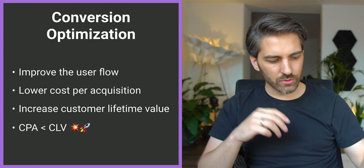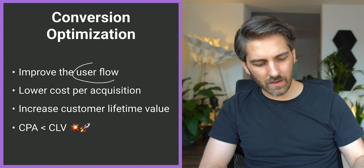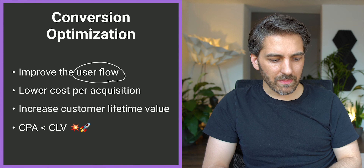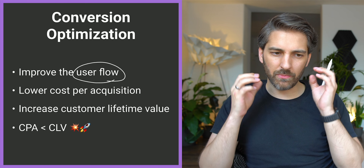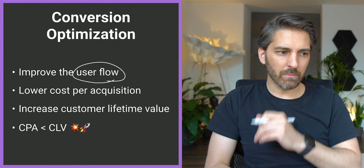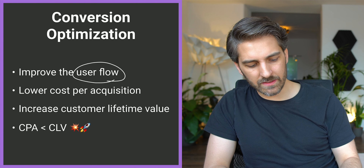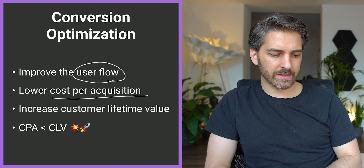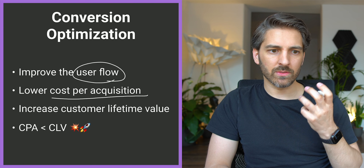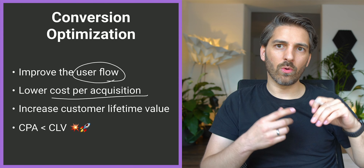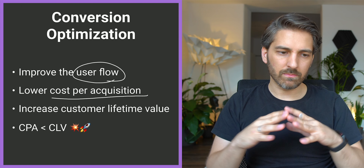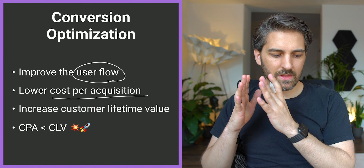The general idea is to improve the user flow — if it gets smoother, then we have optimized our conversions. From the marketing point of view, user flow is heavily involved in the product as well, but in marketing we're interested in two things. The first thing that comes to mind is cost per acquisition or customer acquisition costs, which is probably what most people focus on when they try to optimize conversions and use A-B testing — they want to drive the cost for an email subscriber, a customer, or a free trial as low as possible.